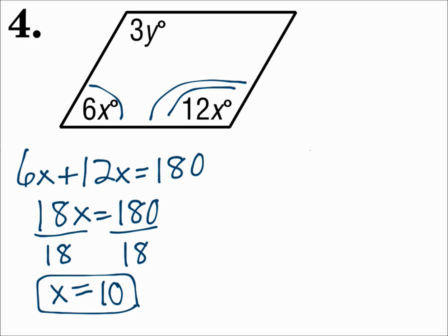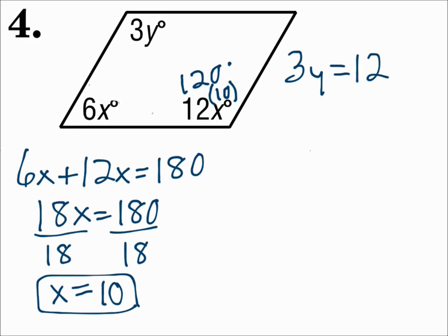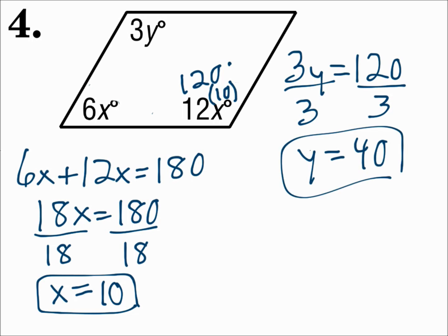Now since x is 10, I can substitute in for 12x, and that angle is 120 degrees. Since opposite angles are congruent, instead of saying 3y equals 12x, I can now say 3y equals 120. Divide both sides by 3 and y is 40. In a parallelogram, opposite angles are congruent and consecutive angles are supplementary.